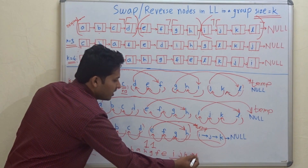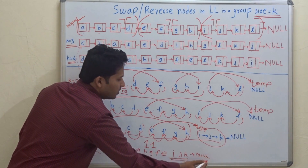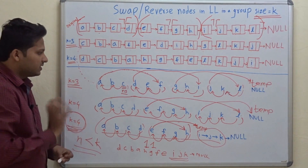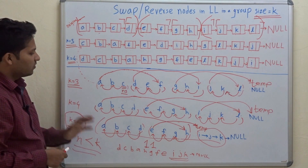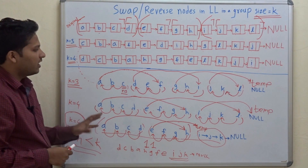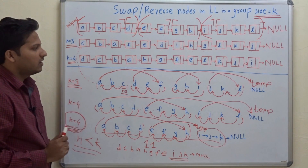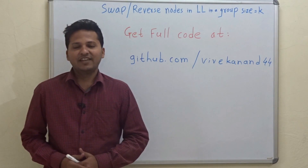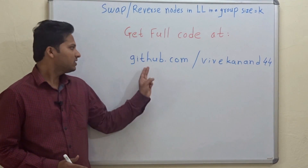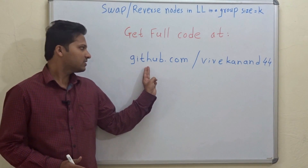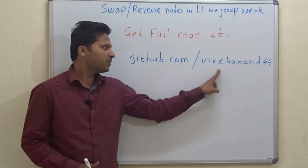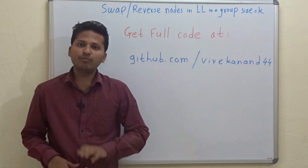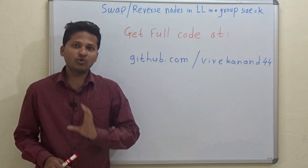So this is how we reverse the elements of a linked list in groups. And friends, you can get the full code on this link — that is GitHub.com/Vivekanan44. And soon I will post a video explaining the code.